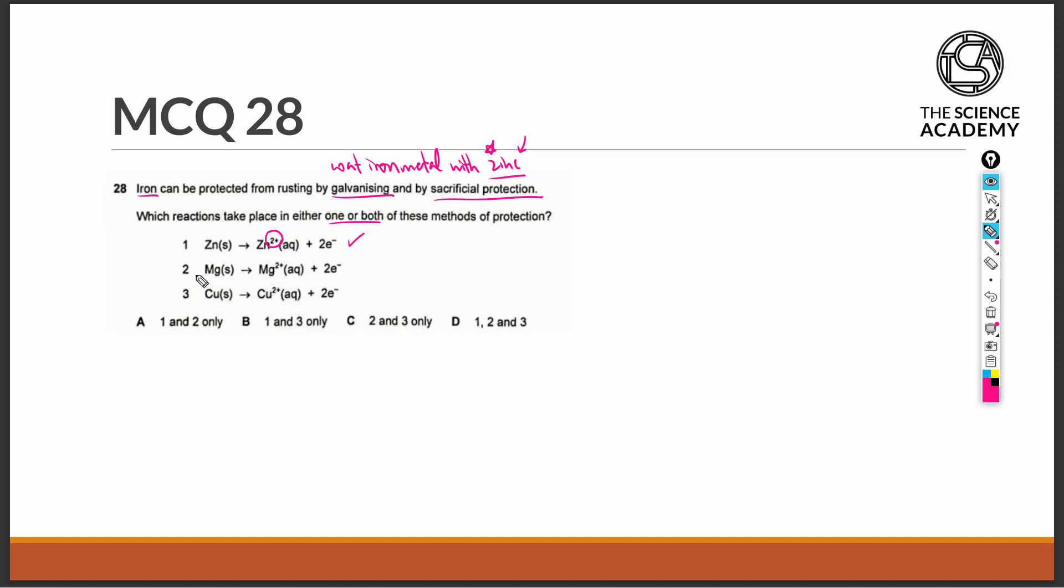Option 2 states that magnesium is oxidized into Mg 2 plus ions. This is also true because magnesium is above iron in the reactivity series and can be used as a sacrificial metal in sacrificial protection of iron. Therefore, statement 2 is also correct.